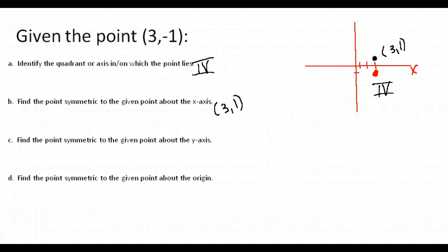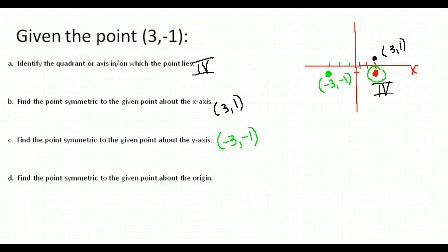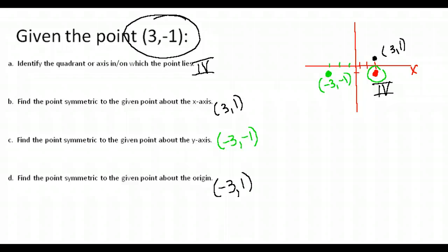About the y-axis: our original point is three to the right of the y-axis, so our symmetric point would be three to the left — that gives us negative three, negative one. Finally, about the origin: take the original point and change the sign of both the x and y-values. Instead of three, negative one, we get negative three, positive one. So there you go — that's how you name the quadrant and find symmetry about the x-axis, y-axis, and the origin.